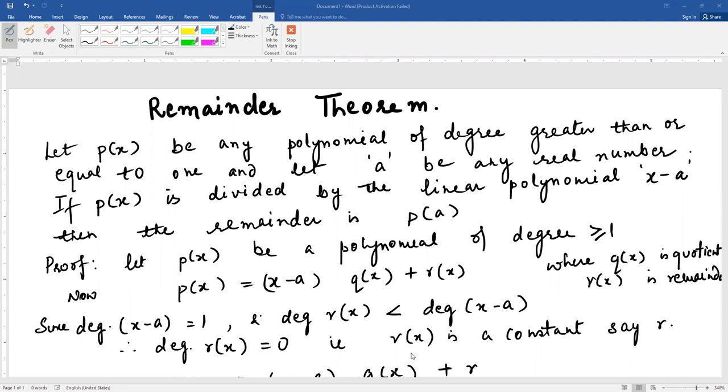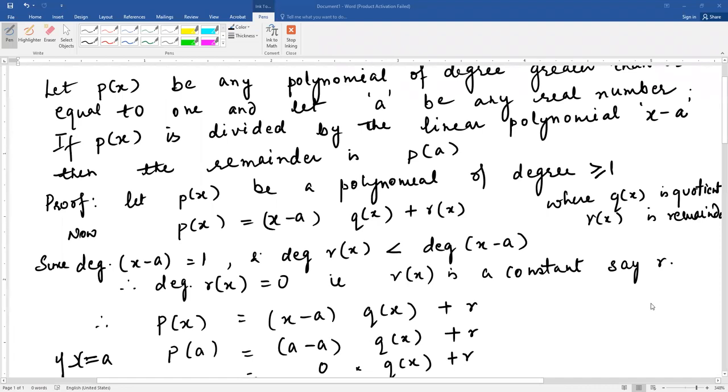Now, if the remainder's degree is zero, that means the remainder is a constant. That means let us take it as r. This is a constant number.